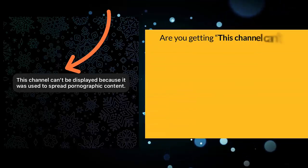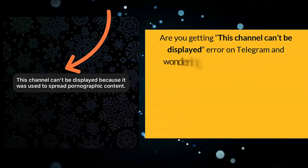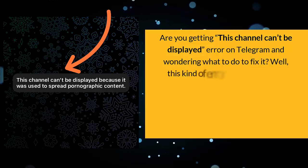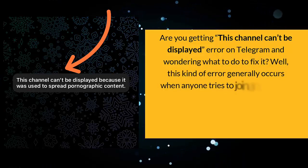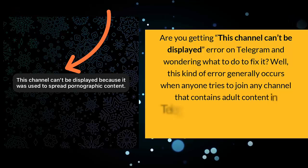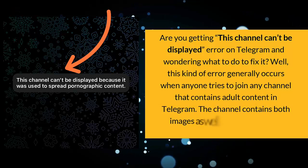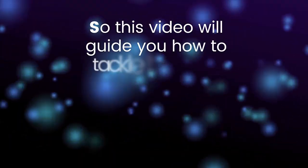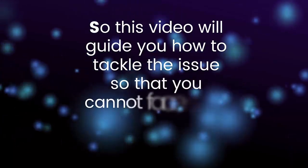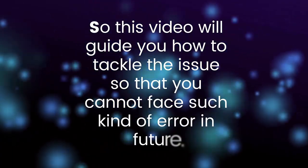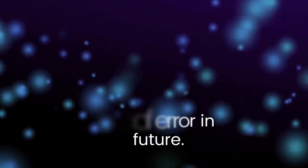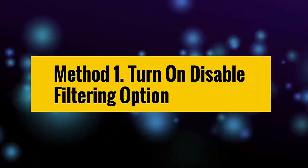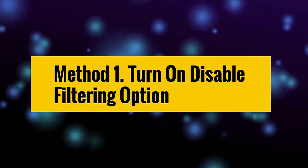Are you getting the 'channel can't be displayed' error on Telegram and wondering what to do to fix it? This kind of error generally occurs when anyone tries to join a channel that contains adult content in Telegram. The channel contains both images and videos that are unsafe. This video will guide you on how to tackle the issue so that you do not face such an error in future.